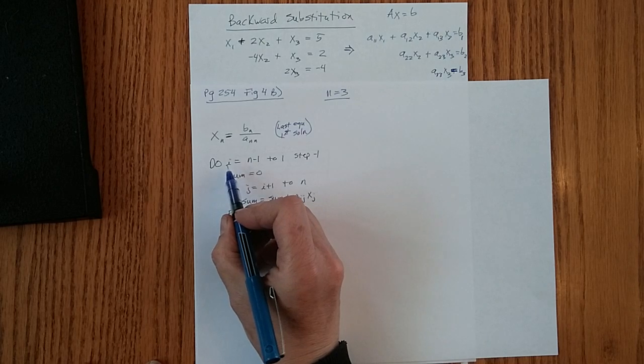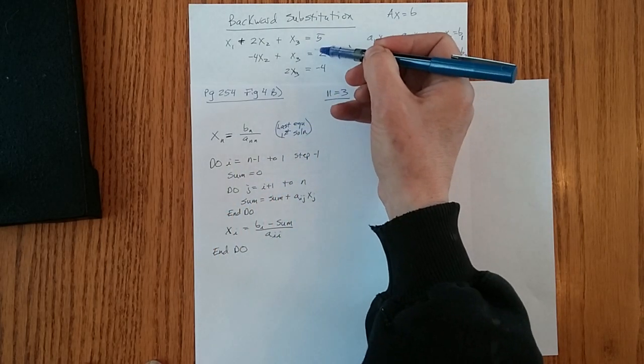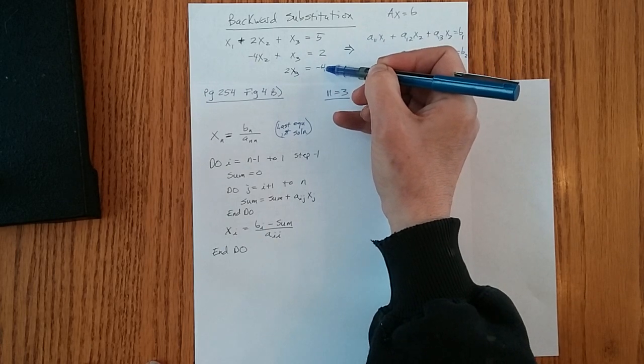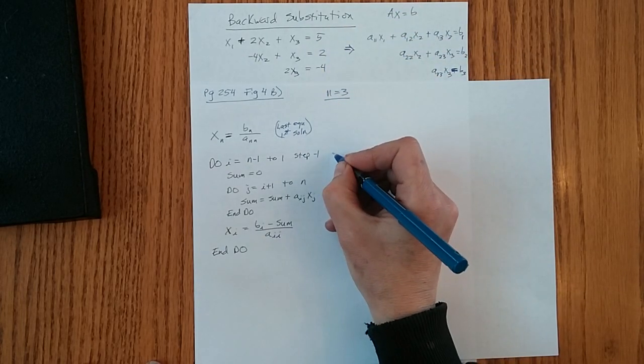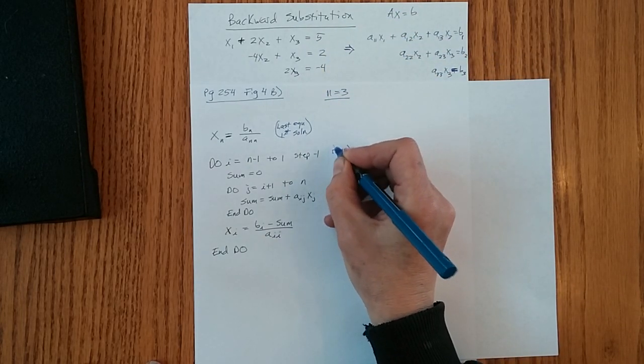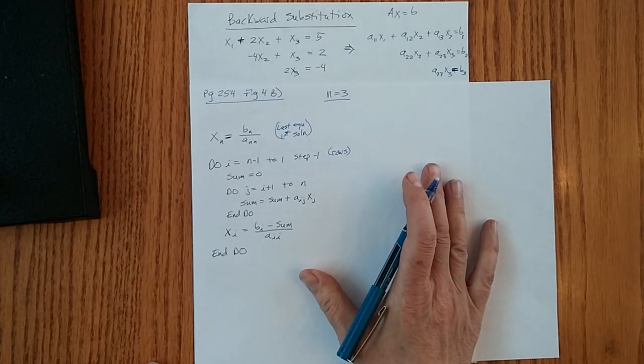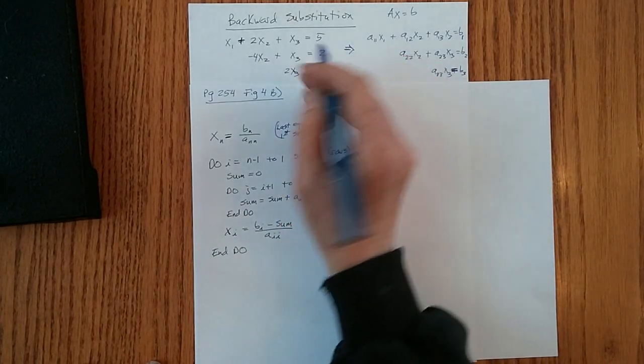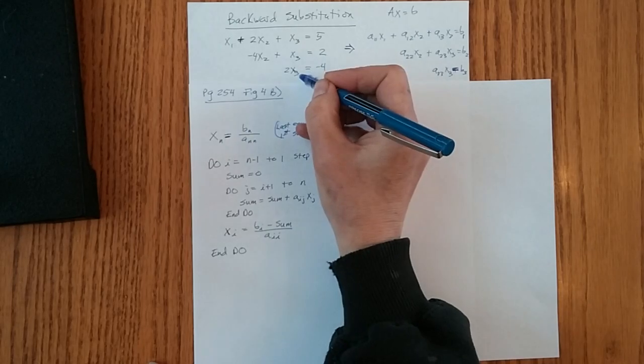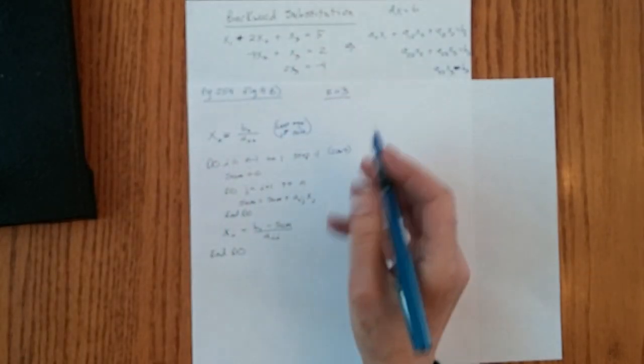The i-loop is going to step us through, actually backward. It's going to step us through the rows, through these equations. The j-loop is going to step us within a row. It's going to step us through the columns.